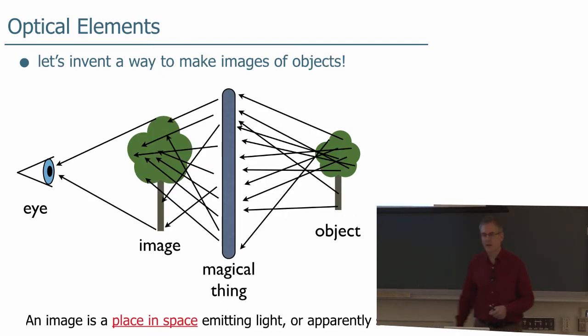So let's invent a way to make images. That sounds like a fun thing. So if we have an object and light is coming out of the object, we'll send that light into some magical thing, and that magical thing will reassemble the light in just such a way as to make an image of it over here that you can see with your eye.